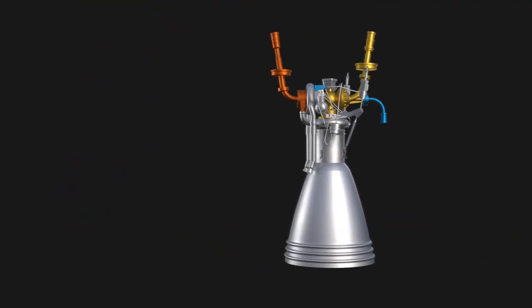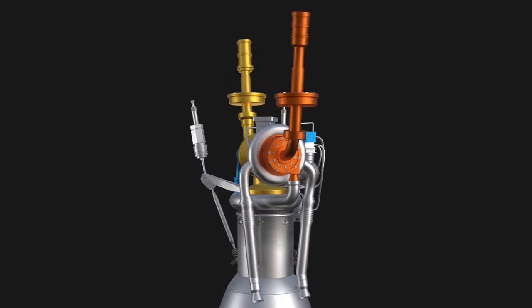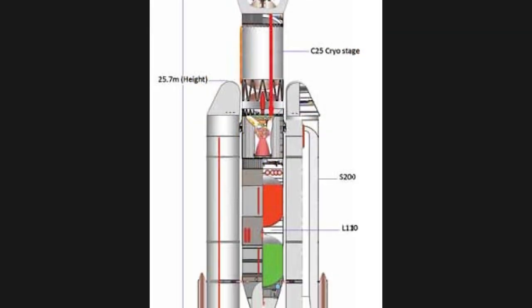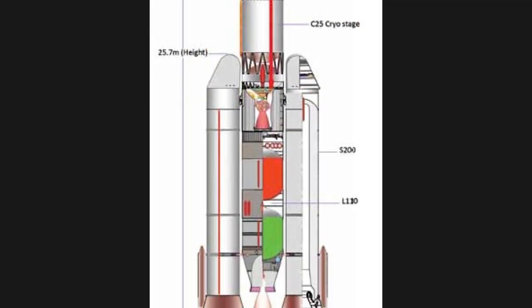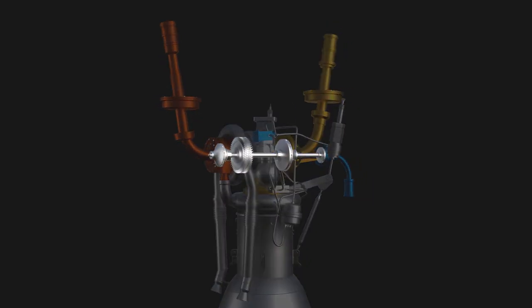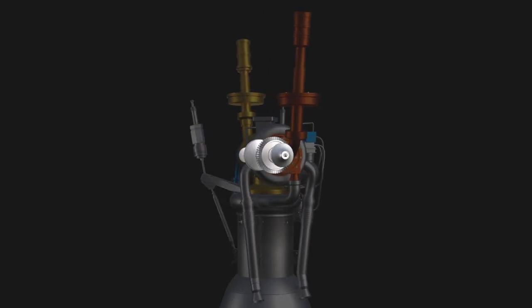These two primary propellants flow through all the plumbings that you see here. The fuel and oxidizers are stored in the big tanks in the rocket body. There are pumps and turbines on a shaft inside this casing. Let's see how fuel and oxidizer flow through the lines.